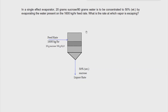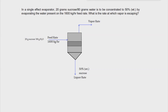There is vapor leaving from the top of the evaporator, and we always assume it's pure water — otherwise the purpose of evaporation would be defeated. The steam enters the heating medium section and exits as a condensate — it's still hot. So I'll draw the steam in red to give it distinction. Steam enters at this portion and exits as condensate. That is our steam rate.